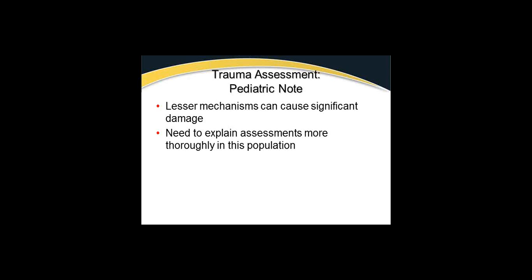Pediatric notes - lesser mechanisms can cause significant damage. When we talked about fall heights, we said three times a person's height as the threshold. In kids that could be six, eight, or ten feet, whereas in adults we're generally talking 15 to 20 feet. We need to explain assessments more thoroughly to this population - they don't understand what we're doing and know only that a stranger is touching them. We have to try to win their trust, involve their caregivers when possible, and tell them what we're doing.